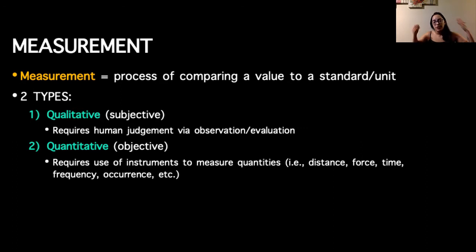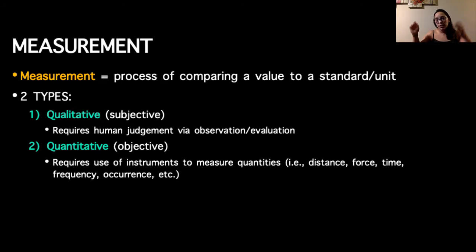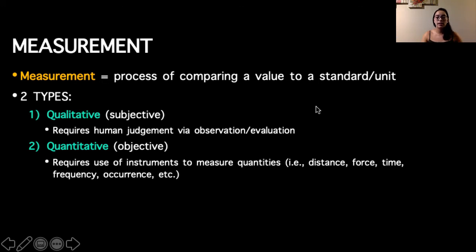In terms of measurement, this is what we do on our sample — it's the process of comparing a value to a standard unit. A measurement can be numerical or categorical. There should be some type of unit attached to it. If we take a person's weight, that's a numerical value in pounds or kilograms. If we take their height, it's a numerical value in centimeters, meters, or inches. For categories, such as gender, the gender label is considered the standard or unit.